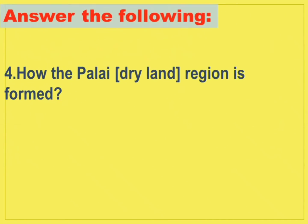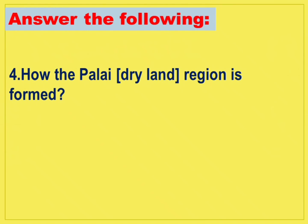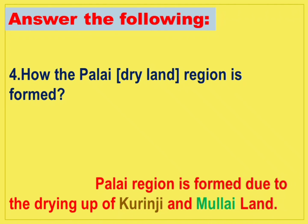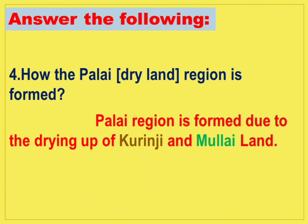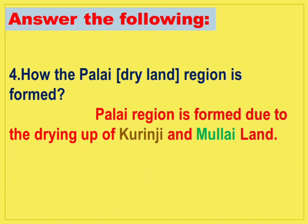Fourth question: how is the Palai, that is dry land, region formed? Palai region is formed due to the drying up of Kurunji and Mullai land.